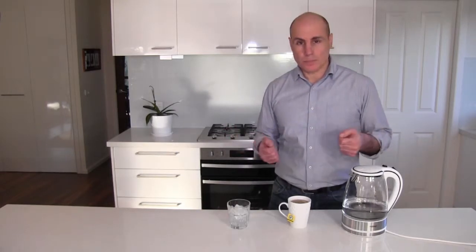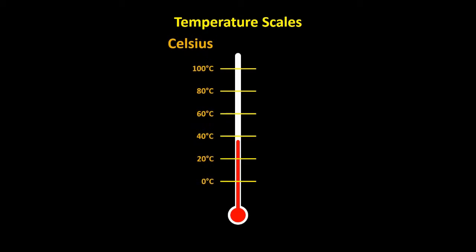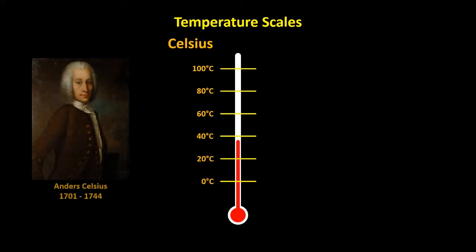To express the temperature of something, we need a temperature scale. Most of the world uses the Celsius scale for temperature, named after Anders Celsius, a Swedish scientist who in 1742, nearly 300 years ago, devised it.